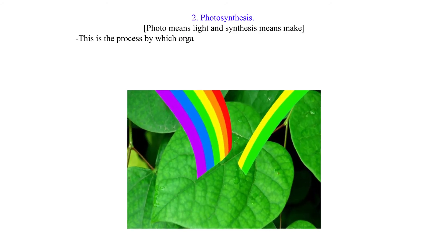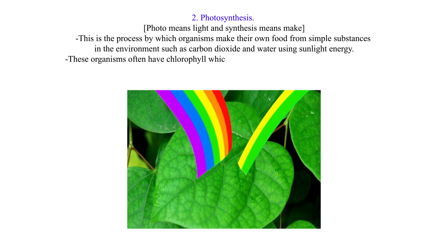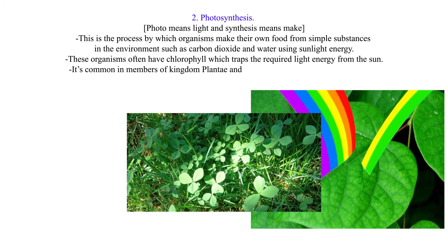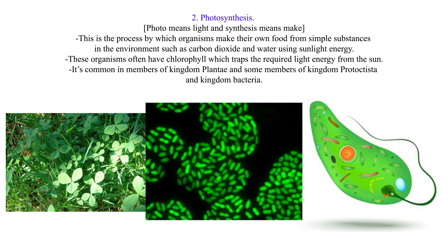Two: photosynthesis. Photo means light and synthesis means make. This is the process by which organisms make their own food from simple substances in the environment, such as carbon dioxide and water, using sunlight energy. These organisms often have chlorophyll which traps the required light energy from the sun. It is common in members of Kingdom Plantae and some members of Kingdom Protoctista and Kingdom Bacteria.